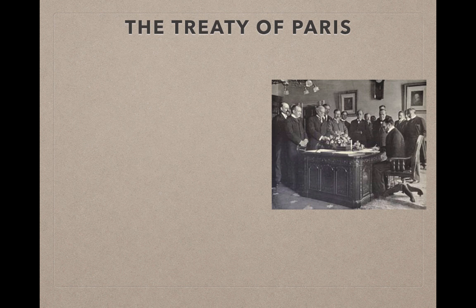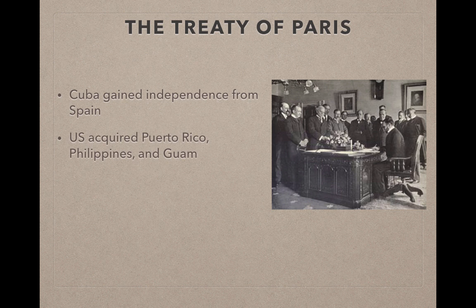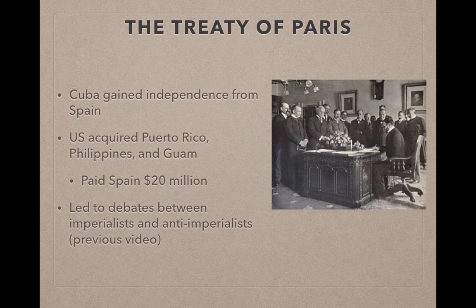The Treaty of Paris ended the Spanish-American War. Cuba gained independence from Spain, and the U.S. acquired Puerto Rico, the Philippines, and Guam — a nation located in the Pacific Ocean — paying Spain 20 million dollars for these territories. These acquisitions led to debates between imperialists and anti-imperialists, as discussed in the previous video, about whether the U.S. should acquire overseas land.